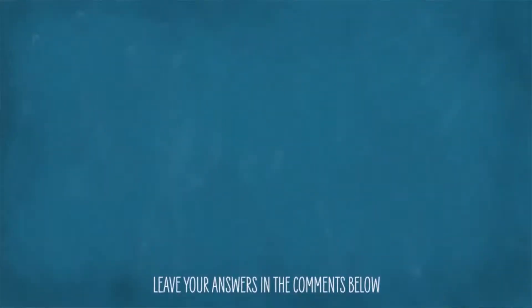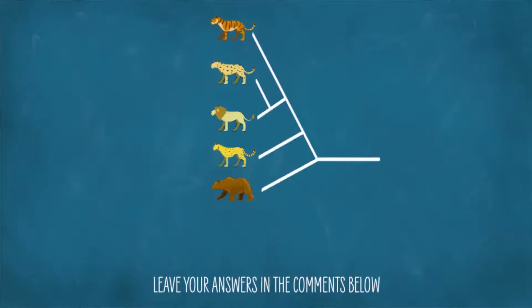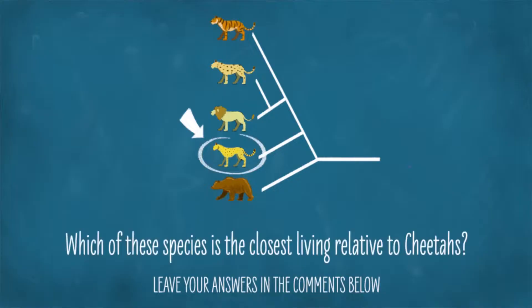And now you know. But to make sure that you understand how to interpret phylogenetic trees, I have a couple of questions for you to answer down in the comments. Please feel free to ask questions and to help one another as well. So first, looking at our phylogeny of lions, tigers, leopards, cheetahs, and grizzly bears, what are the closest living relatives on this phylogeny to cheetahs?